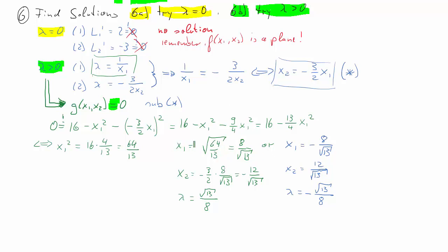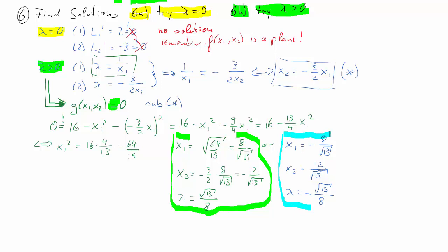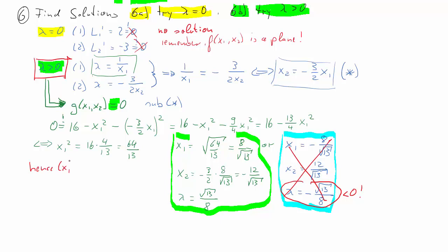So we have a potential green solution (x₁, x₂, lambda) and a potential blue solution. The blue solution is not viable because lambda is negative, which violates the necessary condition that lambda ≥ 0. Therefore, the only valid solution is x₁* = 8/√13, x₂* = negative 12/√13, and lambda* = √13/8. This is the solution to our problem.